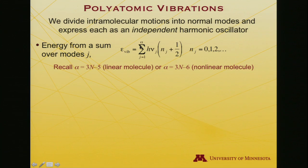The total vibrational energy is a sum over modes, j equals 1 to alpha, so there will be alpha normal modes. Recall, for a linear molecule, alpha is 3N minus 5, where N is the number of atoms. For a nonlinear molecule, it's 3N minus 6. Every one of those normal modes contributes Planck's constant times its characteristic vibrational frequency, indexed by j, times n plus one half, where n is the quantum number associated with mode j.